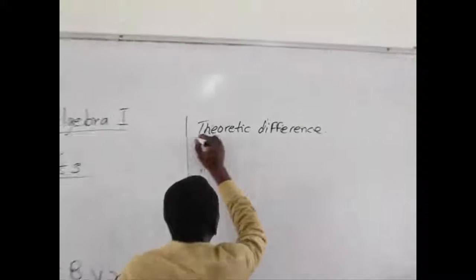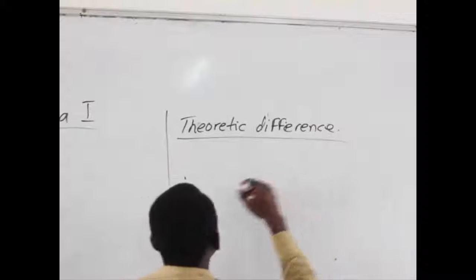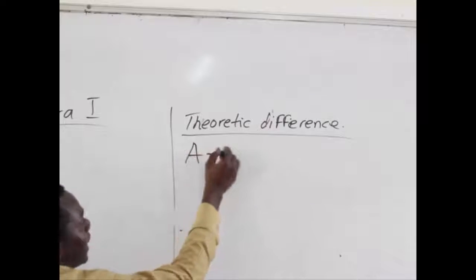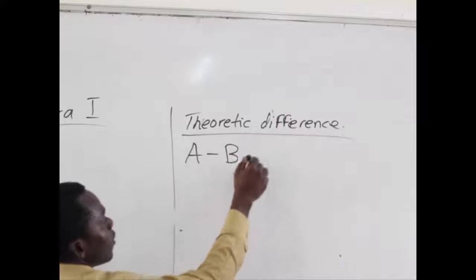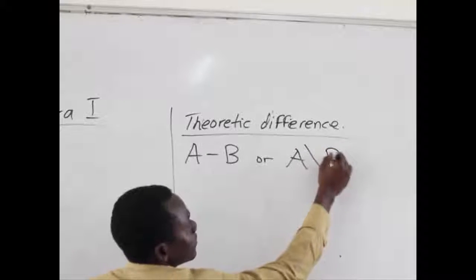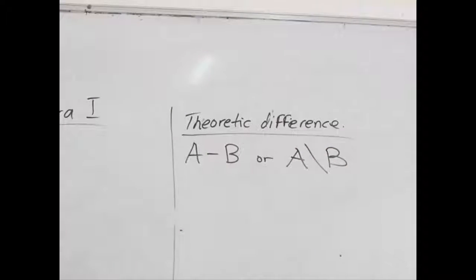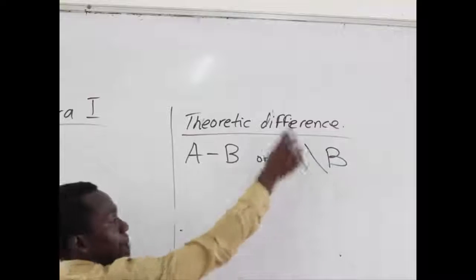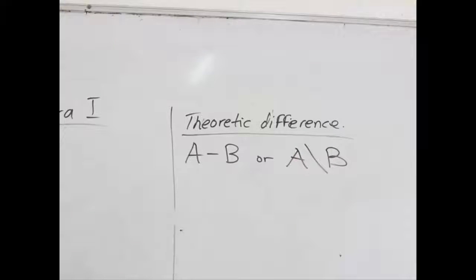The Theoretic Difference is written as A-B or we can also write it as A\B. So, if A and B are the sets that we are using, when you see this operation A-B or A\B, we call it the Theoretic Difference of sets A and B.